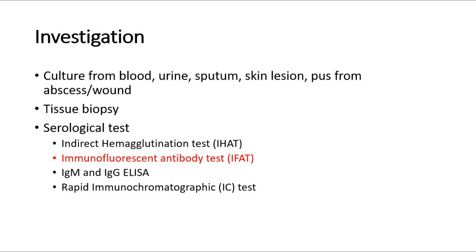Culture from non-sterile sites like sputum or skin ulcers can be problematic and will need special incubation methods or a specimen medium called Ashdown's for selective growth of the bacteria. For serological tests, helpful options include indirect hemagglutination test (IHAT), immunofluorescent antibody test (IFAT), IgG and IgM ELISA, and rapid immunochromatographic tests. In endemic areas, the most rapid, sensitive, and specific test for current infection is the IFAT.